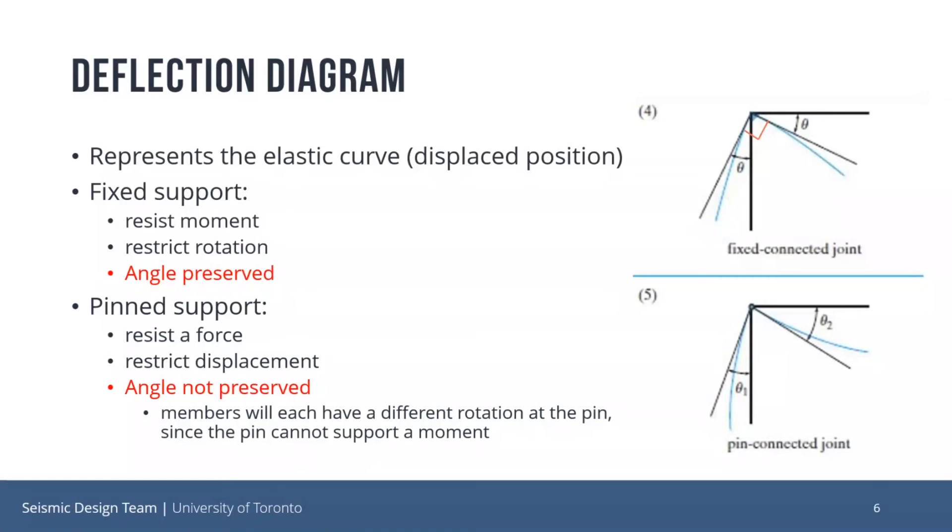And on the other hand, supports that resist a force, such as a pin, resist displacement, and the angle is not preserved. So as you can see on the top right diagram, the deflection of frame members that are fixed connected causes the drawing to rotate the connected members by the same amount. So the two thetas are equal, and the original 90-degree corner remains 90 degrees after deflection. So the blue corner, that's the deflected shape. Even though the beams are bending a bit, the corner is still 90 degrees. Whereas the diagram on the bottom, if a pin connection is used as a joint, the members will each have a different slope or rotation at the pin since the pin cannot support a moment. So theta one is not equal to theta two.